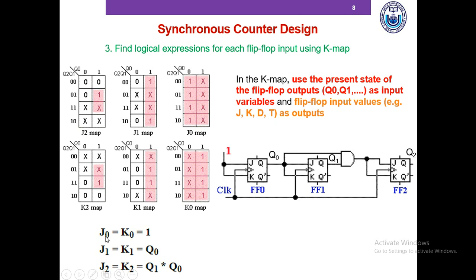Since J0 and K0 are both equal to 1, flip-flop 0 gets 1 for both of its inputs. Since J1 and K1 are both equal to Q0 — the output of flip-flop 0 — the output of flip-flop 0 is fed directly into the J and K inputs of flip-flop 1. For flip-flop 2, J2 and K2 equal Q1 AND Q0, so Q1 and Q0 are ANDed by an AND gate and fed into the J and K inputs of flip-flop 2.